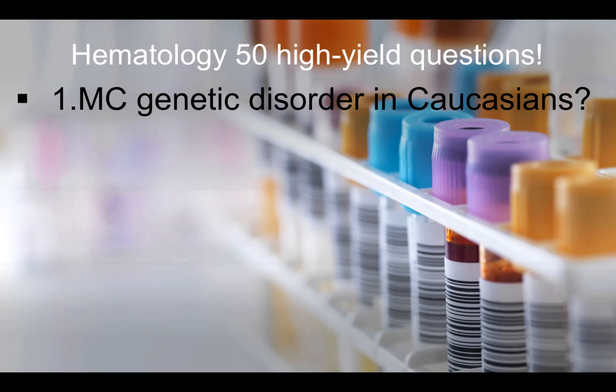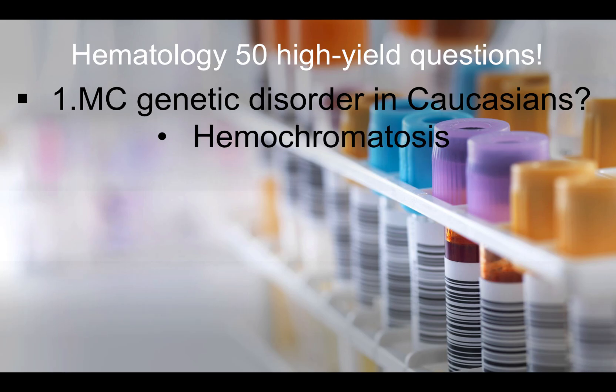Question number one: What is the most common genetic disorder in Caucasians? In a question stem they can give you different genetic disorders and tell you the patient is Caucasian, then ask which one is most common. The answer is hemochromatosis.